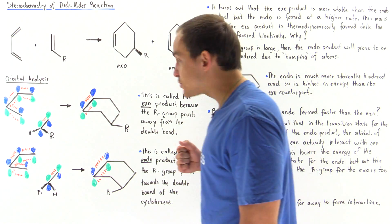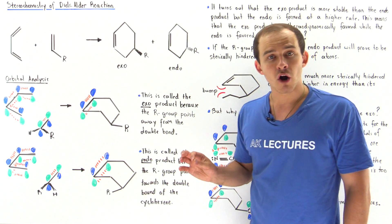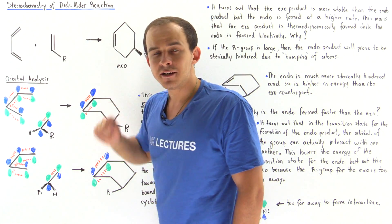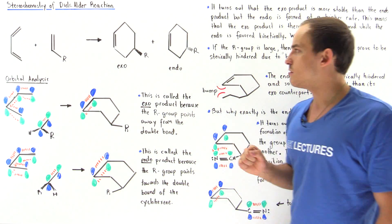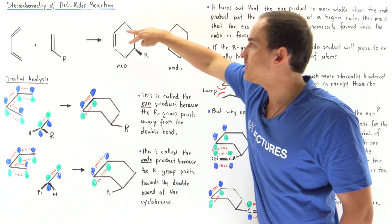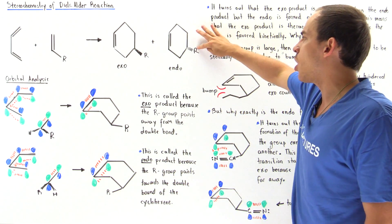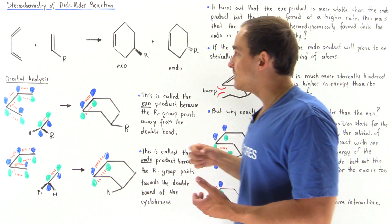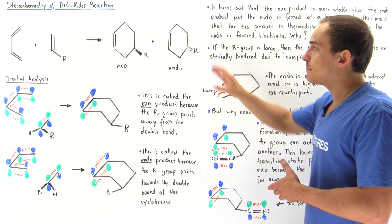When this reaction takes place, there is a possibility of two products forming, as a result of the alkene being able to approach the butadiene in one of two ways. We can form a product where the R group points up away from the double bond — this is known as the exo product — or we can form the endo product, in which the R group points downward directly at our pi bond. Exo means away from the pi bond formed in the product, and endo means towards that pi bond.